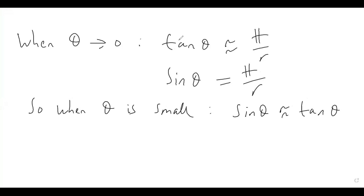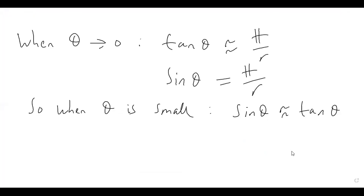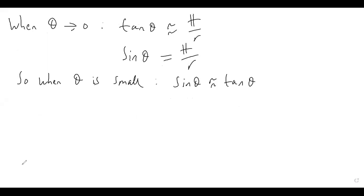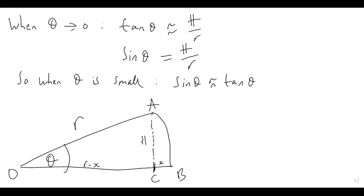Now, how do we actually get the result we want — that sin θ ≈ θ and tan θ ≈ θ? Let's draw a new diagram: the same sector with the arc, the small angle theta, radius R, the small distance x, the distance R - x from C to O, with that being A and B, and height H perpendicular to the base of that sector.